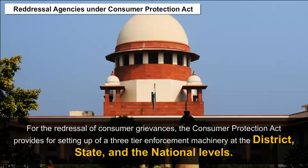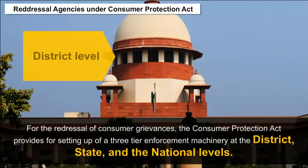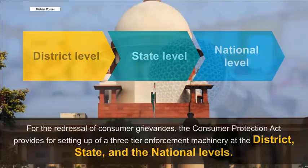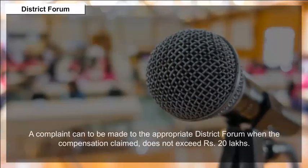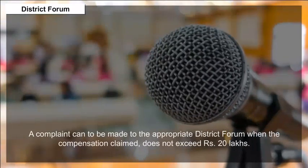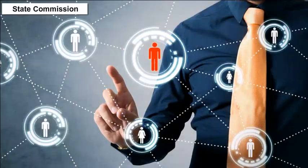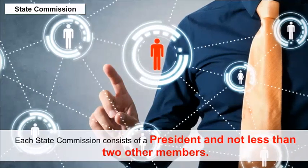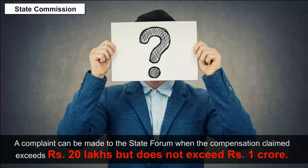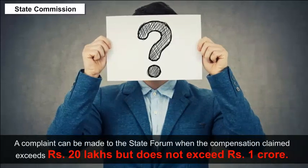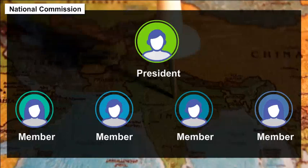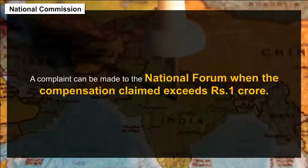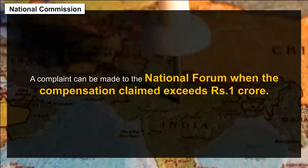Redressal Agencies under the Consumer Protection Act: For the redressal of consumer grievances, the Consumer Protection Act provides for setting up of a three-tier enforcement machinery at the district, state and national levels. District Forum: consists of a president and two other members; a complaint can be made when the compensation claimed does not exceed rupees 20 lakhs. State Commission: consists of a president and not less than two other members; a complaint can be made when the compensation claimed exceeds rupees 20 lakhs but does not exceed rupees 1 crore. National Commission: consists of a president and at least four other members, one of whom should be a woman; a complaint can be made when the compensation claimed exceeds rupees 1 crore.